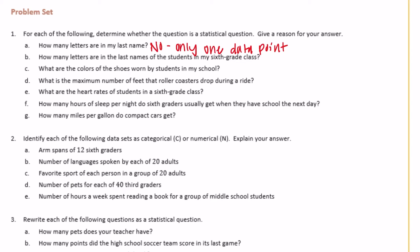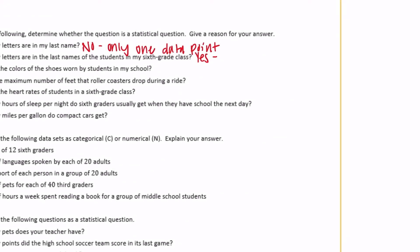Part B: 'How many letters are in the last names of my students in the sixth grade class?' This turns the previous question into a statistical question. It will have multiple points of data — someone might have five letters, someone seven, someone eight, someone four — so you can collect multiple points of data.